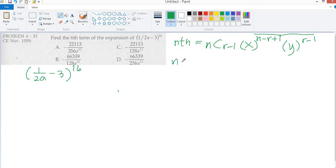Where n is the exponent given in the problem, and r is the value of terms we're looking for. For example here, the n is 16, and r is 6 terms.